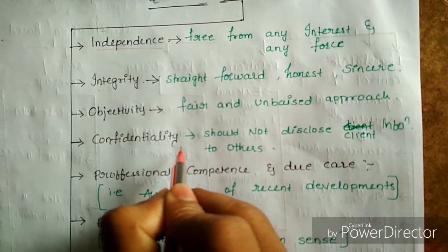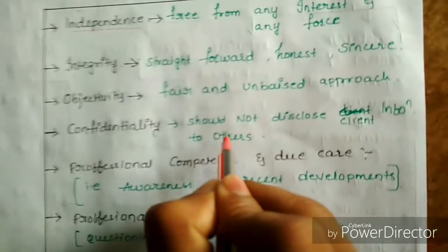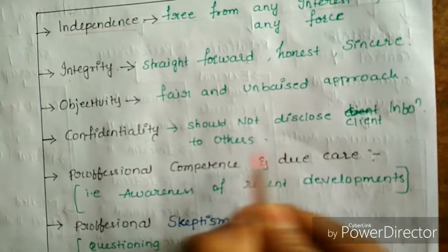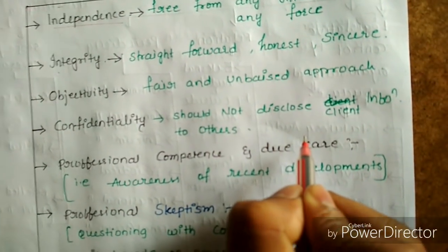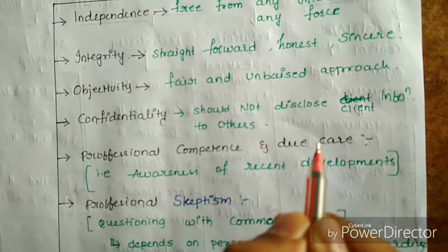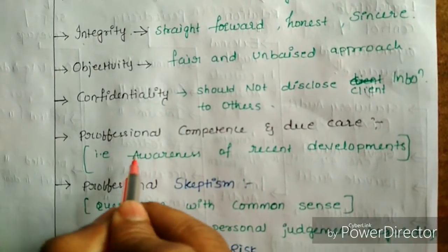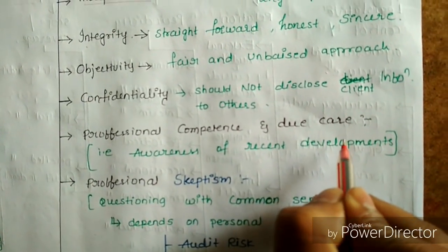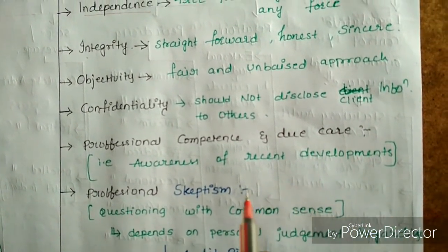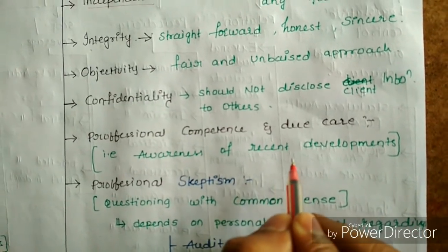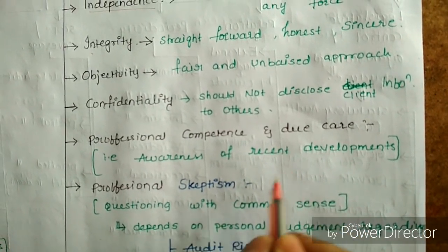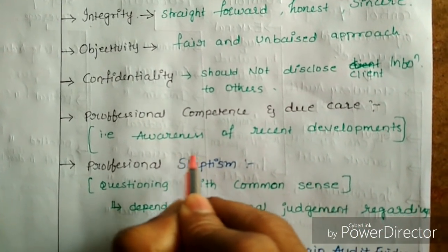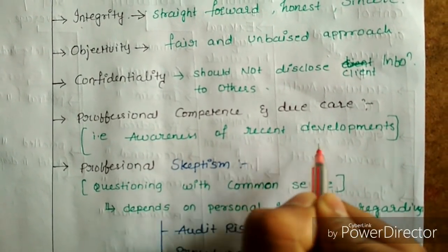Confidentiality means the auditor should not disclose client information to others — he should maintain confidentiality. Professional competence and due care: he should update his subject knowledge from time to time, meaning awareness of recent developments.